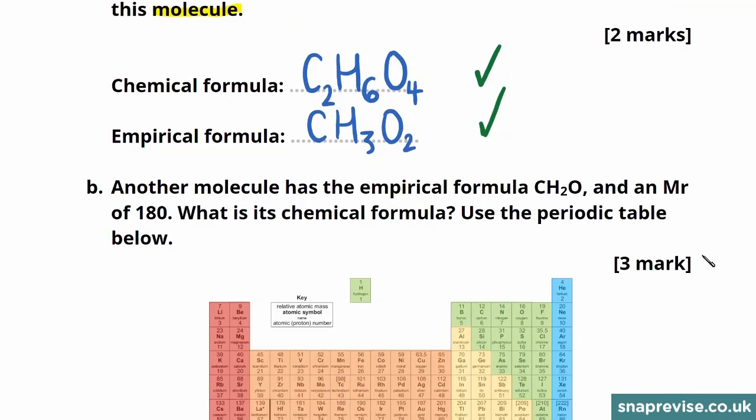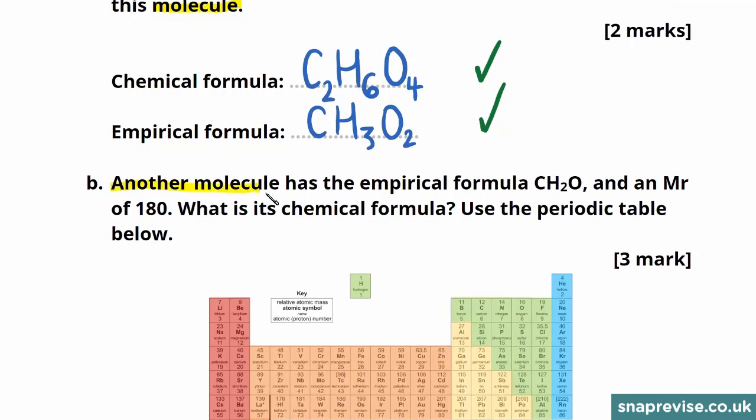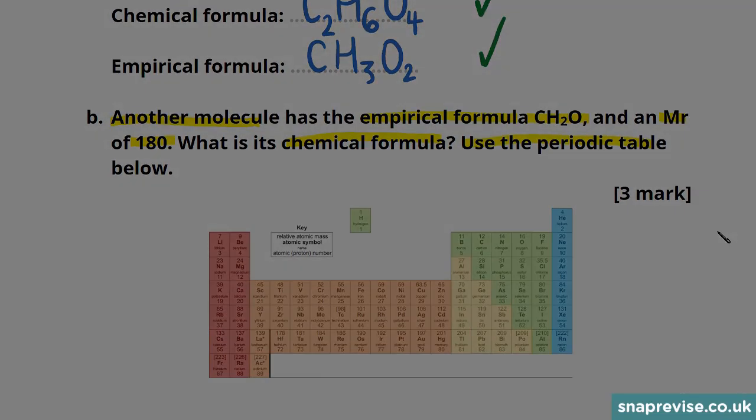In the next part of the question, we're told about another molecule, which has the empirical formula of CH2O and an MR or relative formula mass value of 180. The question asks us, what is its chemical formula? And we're told to use the periodic table below, which is a hint.